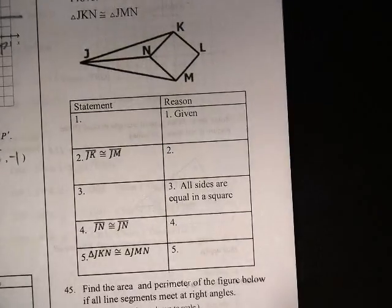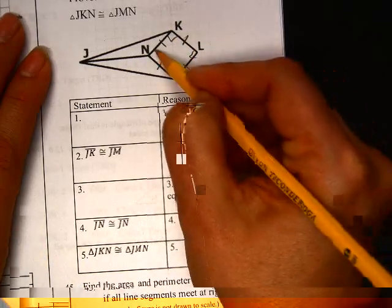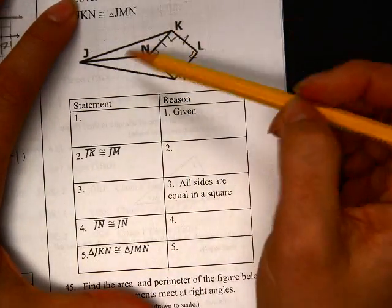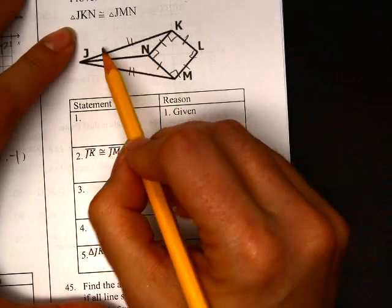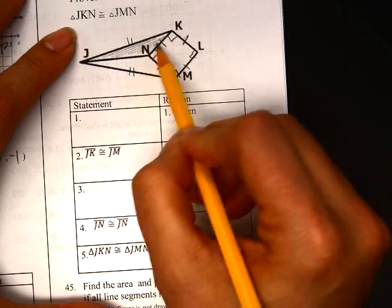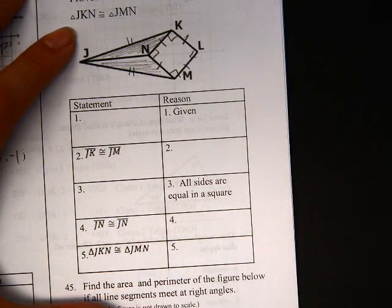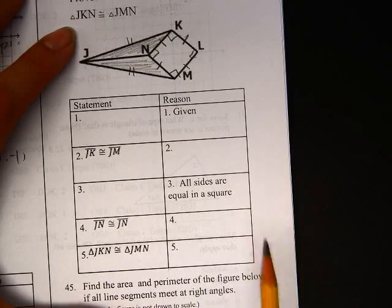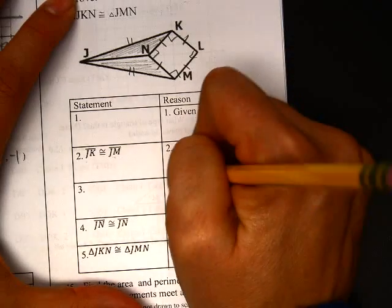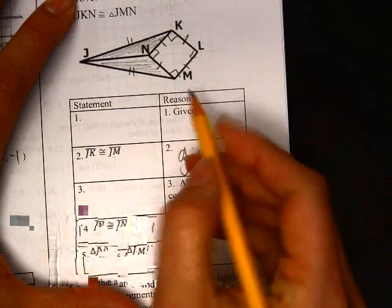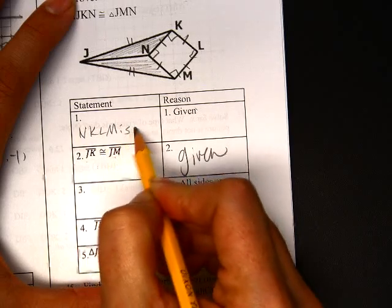Alright. 44. This little dude is a square. JK equals JM. And we're trying to prove that this little dude here is equal to this little dude here. Alright. So, well, let's see. JK and JM, this is given. We're also only given one other thing, and that is that NKLM is a square.